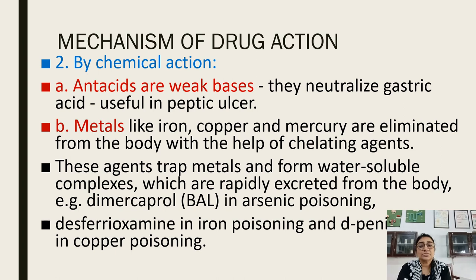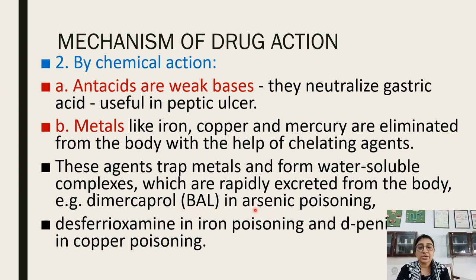Chemical actions — antacids are weak bases that neutralize gastric acid, useful in peptic ulcer. In metal poisoning, like iron, copper, and mercury, the metals can be eliminated with chelating agents. For example, iron is eliminated by administering deferioxamine, and D-penicillamine chelates with copper poison, trapping the metal and forming water-soluble complexes that are rapidly excreted from the body.